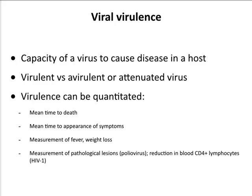You can infect the mouse and see how long it takes to die if the virus causes a lethal infection, or measure mean time to appearance of symptoms — for influenza, weight loss is often measured because influenza causes a transient drop in weight. You can also measure lesions caused by the virus: for polio, you can section the spinal cord and brain and look for neuronal death, giving it a numerical score. For HIV, the reduction in CD4-positive lymphocytes is a good measure.